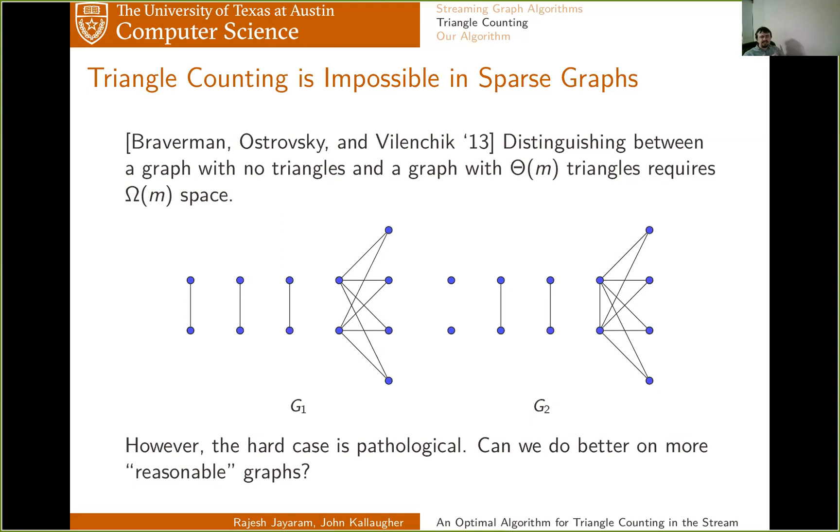But the good news is the graphs that are used to prove this lower bound are pathological graphs. They have this really unusual structure in that every single triangle in the graph intersects at just one edge. And so intuitively, you can see why it would be hard to distinguish between these two cases. If that one really important edge arrives early in the stream, when you can't tell it from all the other edges, then unless you're keeping omega of M edges, you probably won't keep it, and so you'll have no idea which of these two cases you're in. So a natural question to ask is, can you do better on more reasonable graphs?